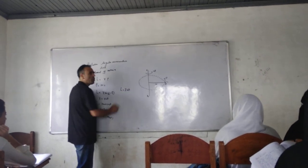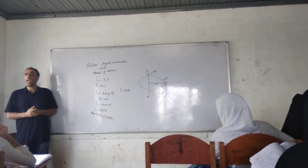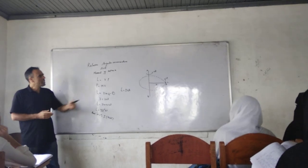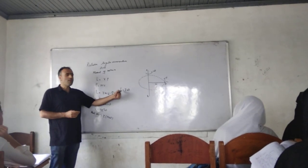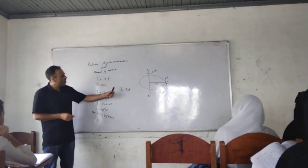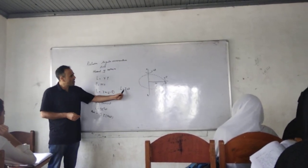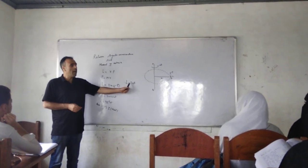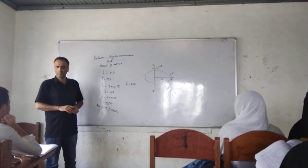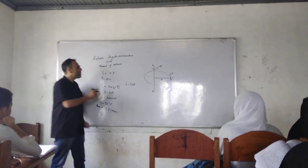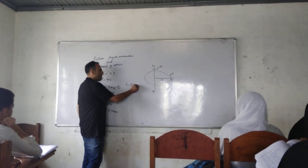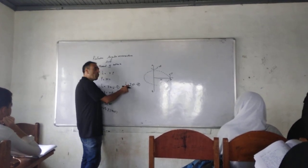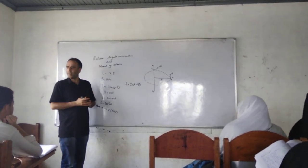L is equal to I omega. This is the linear relation between angular momentum and moment of inertia. From this equation, we can also define the moment of inertia again.